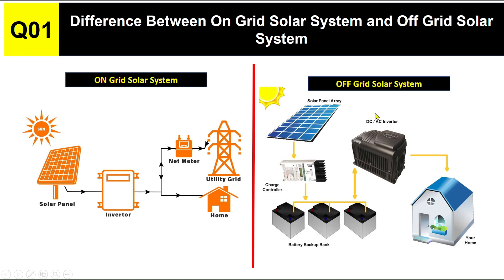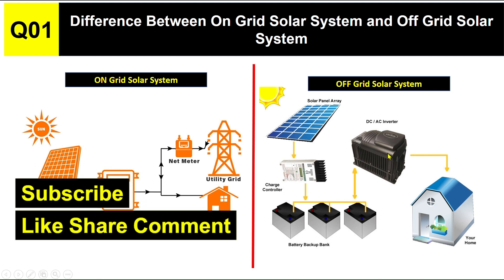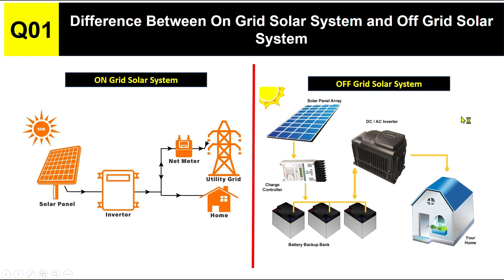The other system is the off-grid solar system. You can see here the solar panel array — from here, electricity goes to the battery bank, which gets charged. From there it goes to the DC-to-AC inverter and then to the home. There is no connection to the utility grid; the solar system is not connected to the grid. During times when sunlight is not available, the customer gets electricity supply from the battery bank. This is the main difference between the two systems.